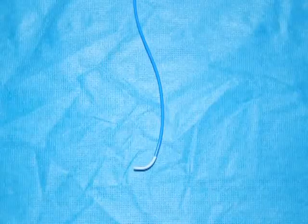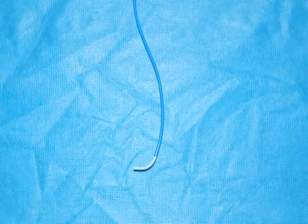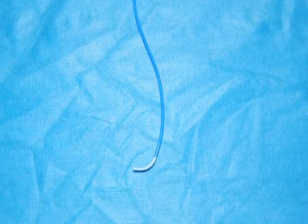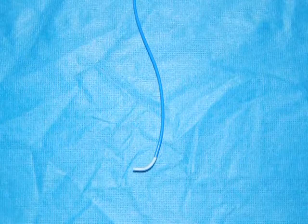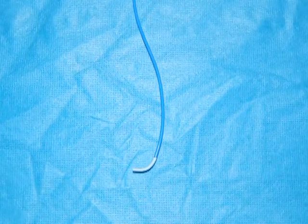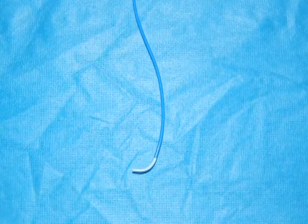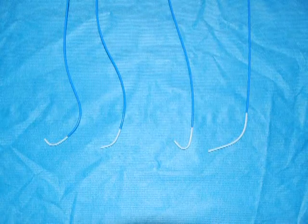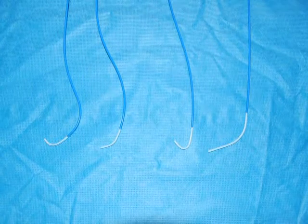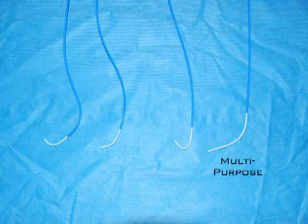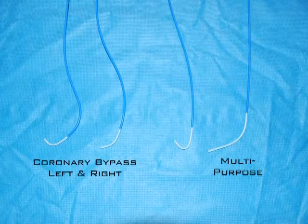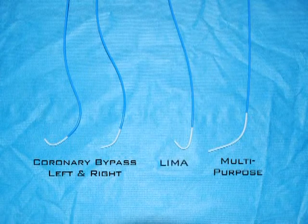Pigtail catheters can be obtained in either a straight configuration or a 145 degree angled configuration. For the Judkins right JR4, there are generally very few indications to use a shorter secondary curve. Specially curved catheters are also available, including the multi-purpose catheter, a right bypass graft catheter, and a left or right internal mammary catheter.